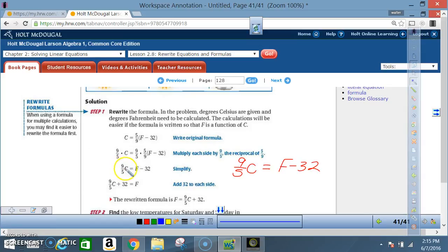Now for those of us who may have been confused between this step and this step, let's go back again. 9 times 5 is 45. 5 times 9 is 45. 45 divided by 45 is 1. So this whole thing right here cancels out. Or you could do it this way. 9 divided by 9 is 1. 5 divided by 5 is 1. 1 divided by 1 is 1. Once again, all of this will cancel out, and you're left with F minus 32.